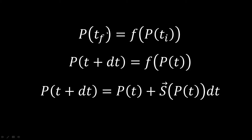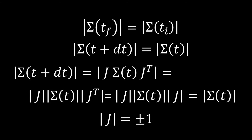If we consider that our evolution is infinitesimal, so that the final time is just t plus dt, and the change can be written as a first-order expansion in t, then we already see our first mathematical condition for Hamiltonian mechanics: the point at t plus dt equals the point at t plus the vector S evaluated at the point p.